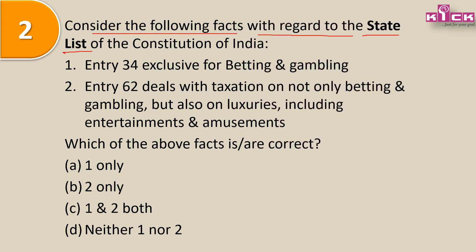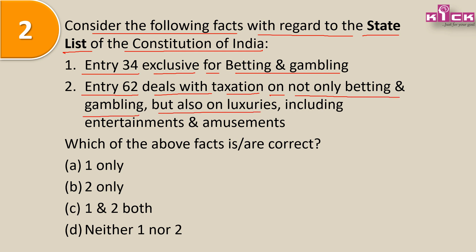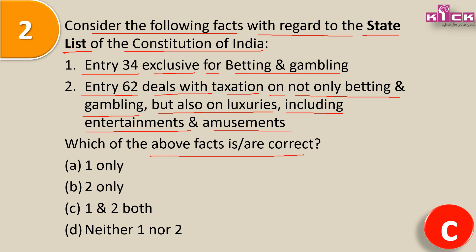Second question - consider the following facts with regard to the State List: Entry 34 is exclusively for betting and gambling; Entry 62 deals with taxation not only on betting and gambling but also on luxuries including entertainments and amusement. Answer is C - both are correct. Entry 34 में शर्फ betting and gambling है, लेकिन Entry 62 में taxation on luxuries including entertainment, amusement, and betting and gambling - यह word है, थोड़ा ध्यान में रखो।